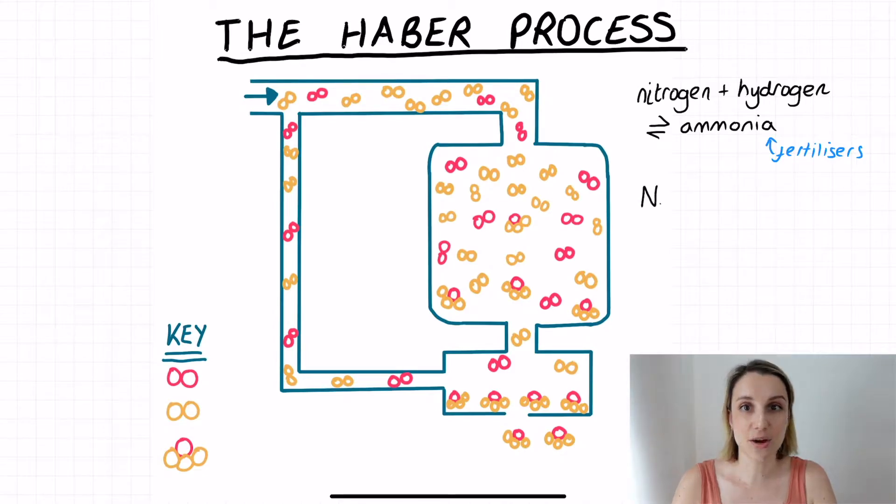This is the symbol equation balanced: nitrogen plus hydrogen gives us ammonia. You'll notice that in the middle here there's this weird arrow. This is how we show that it is a reversible reaction which means that the reaction can proceed in both directions.